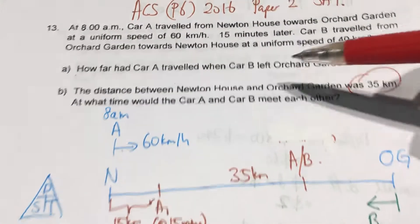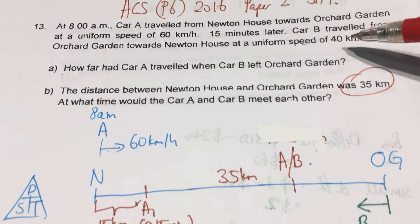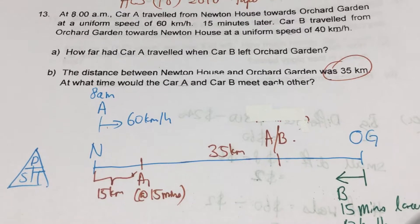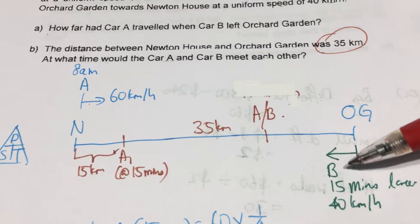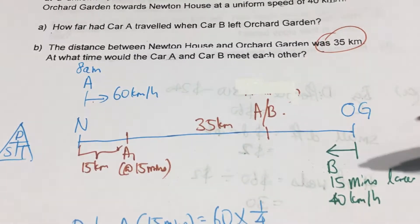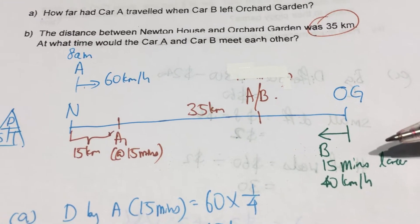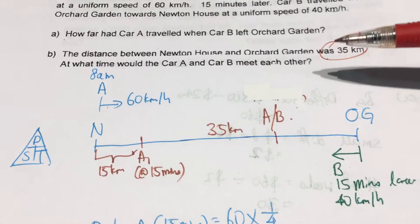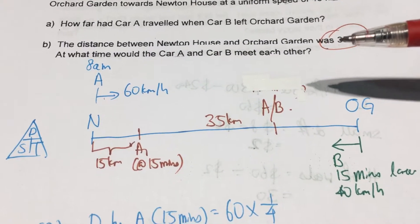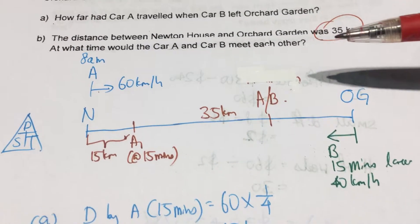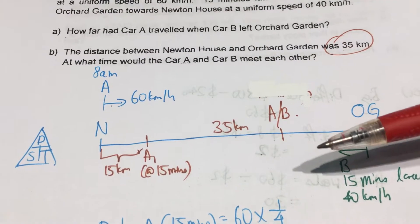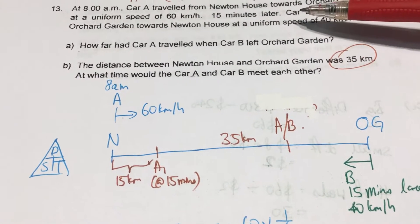And then next, 15 minutes later, car B traveled from OG towards Newton House. So I draw B pointing towards the left. And I write here, 15 minutes later, at 40km per hour. And my habit of doing speed question will be to condense everything into the distance timeline, so that it's only for me to refer back to the question again.